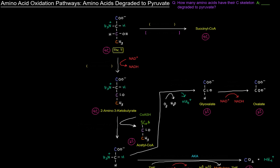Now we're going to get into the actual pathways of degrading the amino acids and their carbon skeletons to each of those key products. We'll start off with the amino acids degraded specifically to pyruvate. So how many amino acids have their carbon skeleton degraded directly to pyruvate?